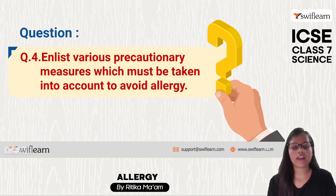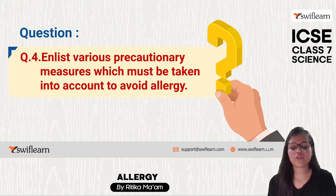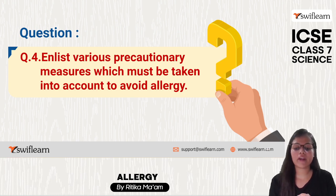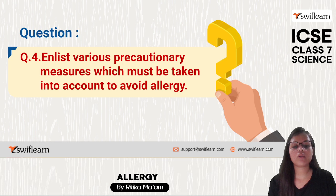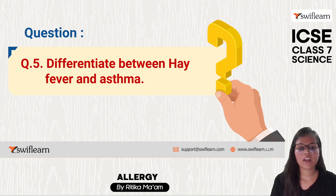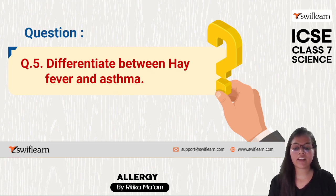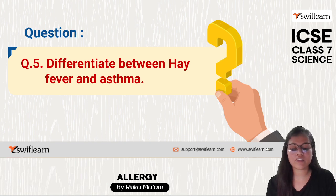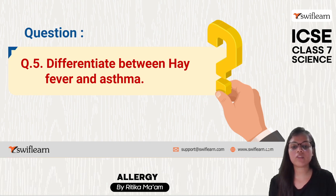Precautionary measures to avoid allergy: wash cushions and soft toys regularly; avoid pets in bedrooms if uncomfortable with their hair; include vitamin C, vitamin E, and omega-3 fats in your diet. Differentiate between hay fever and asthma: hay fever is a seasonal allergy characterized by sneezing and itchiness in the mouth, nasal area, and ears; asthma is a perennial allergy leading to shortness of breath, tiredness, and sleeplessness.